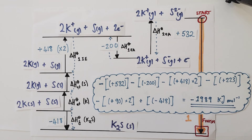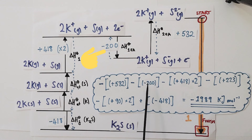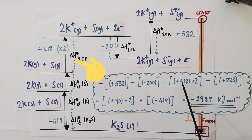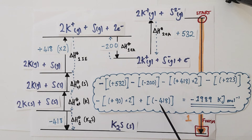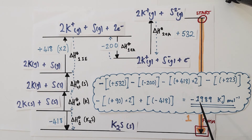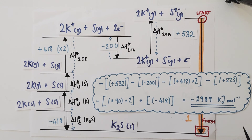Here is the final calculation working. We do the opposite energetics of the second electron affinity, the opposite of the first electron affinity, the opposite of the first ionisation energy times two, the opposite of the atomisation of sulphur, the opposite of the atomisation of potassium times two, and finally the same energetics as the enthalpy of formation of potassium sulphide. The sum of all those enthalpy changes that make up route two gives us a value of −1989 kJ/mol. Since route two has the same energetics as route one, route one also has an enthalpy change of −1989 kJ/mol — and we've solved the problem.